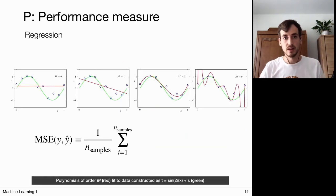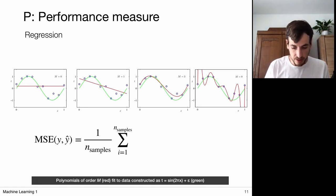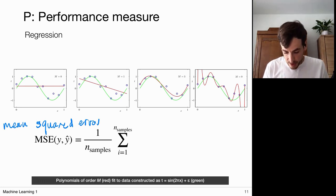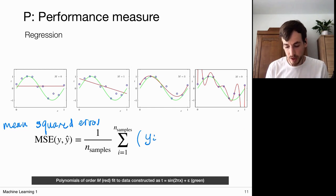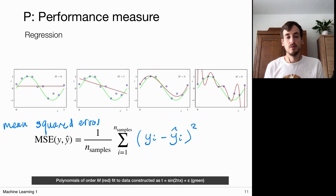For regression we can also measure performance. What is typically used is the mean squared error. We have labeled data, so for every xᵢ we have a target yᵢ and a prediction ŷᵢ. We look at the difference, square it, and take the average over all samples. That's the mean squared error.